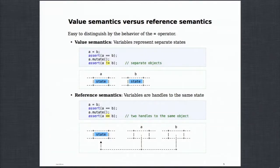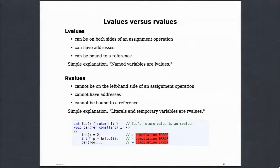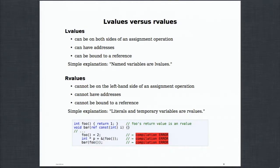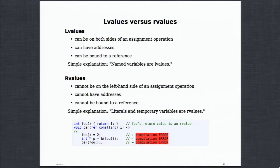L values and R values: L values can appear on both sides of an assignment, their addresses can be taken, and they can be bound to a reference. A layman's explanation: if you have a variable that has a name, that's an L value. R values cannot do any of those — they cannot be on the left-hand side of an assignment, you cannot take their addresses, and you cannot bind them to a reference. If foo is a function that returns an R value, that R value can't be on the left-hand side, its address cannot be taken, and it cannot be passed to a function taking a ref — even if it's a const ref.